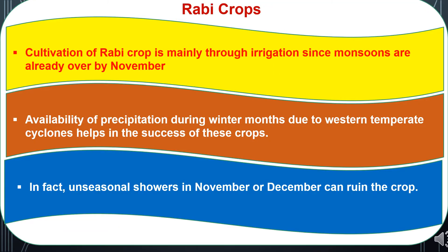Rabi crops are the second major crops grown in India. Their cultivation is mainly through irrigation since monsoons are already over by November. For growing Rabi crops, there should be irrigation facilities available to farmers. Availability of precipitation during winter months due to western temperate cyclones helps in the success of these crops by providing irrigation water. However, unseasonal showers in November or December can also ruin the crops.